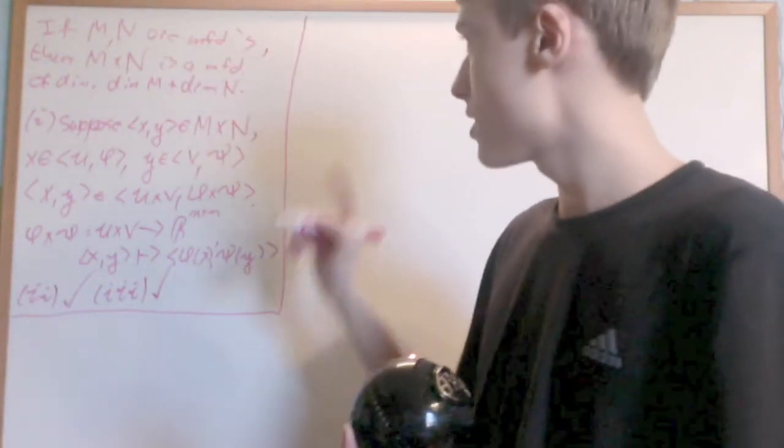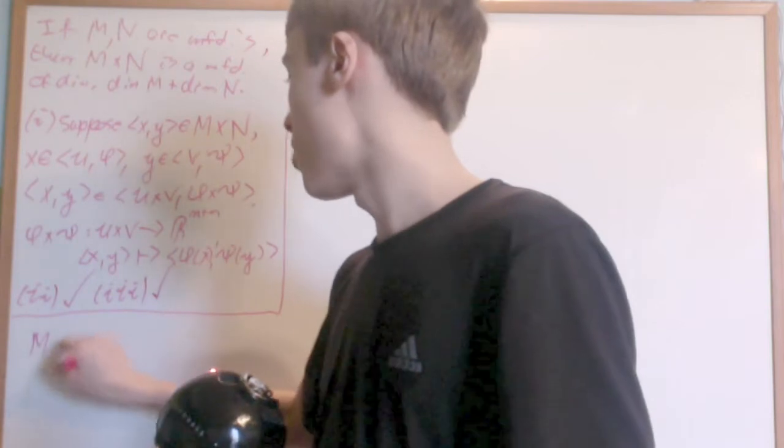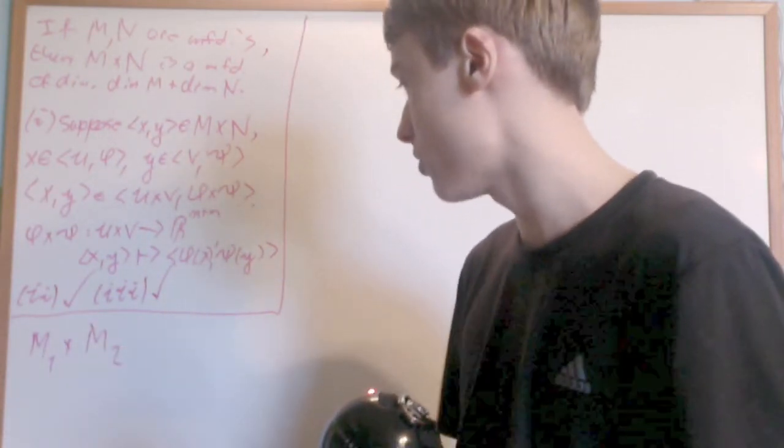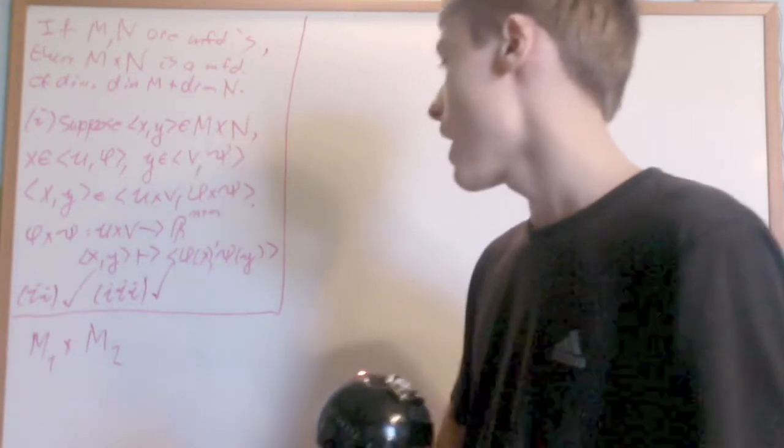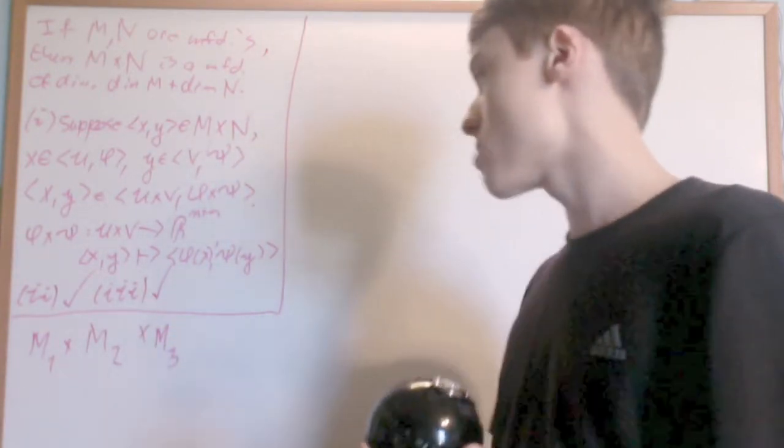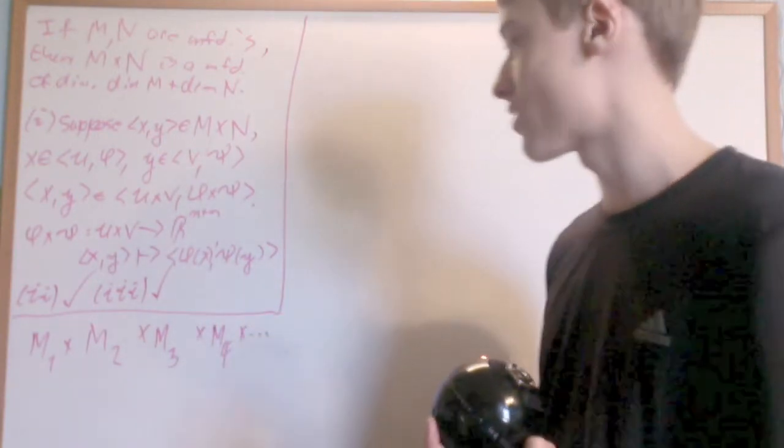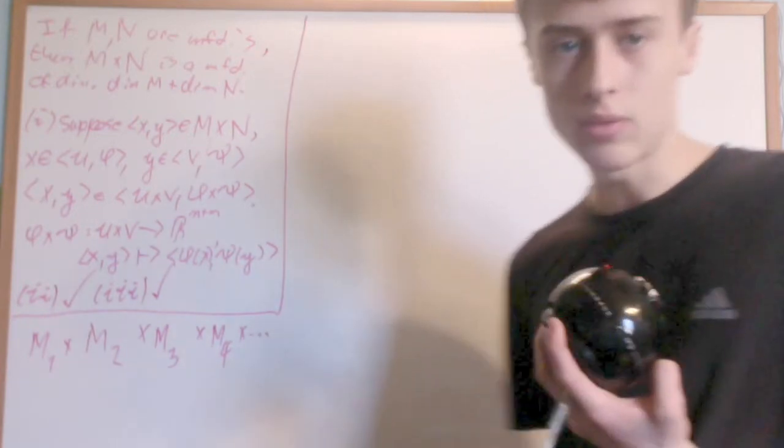From this we can easily see that the finite product of manifolds is still a manifold. If I had M1 and M2, I can take their product—that's a manifold—and I could take its product with another manifold, and so on, just as long as it's finite or else that process wouldn't work.